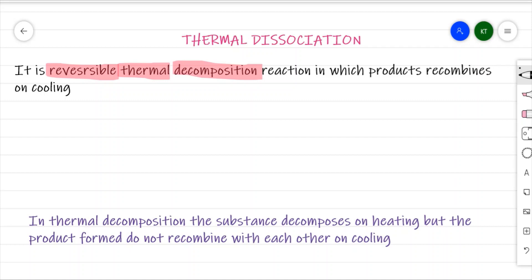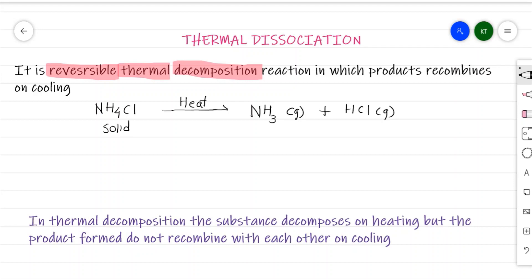Let me take one example for understanding thermal dissociation. We have ammonium chloride, NH4Cl — it is a white color crystalline solid. When I heat this white crystalline solid, it decomposes into ammonia gas and hydrogen chloride gas. Now, the hydrogen chloride and ammonia gas which are formed recombine with each other when they come in contact with a cooler surface.